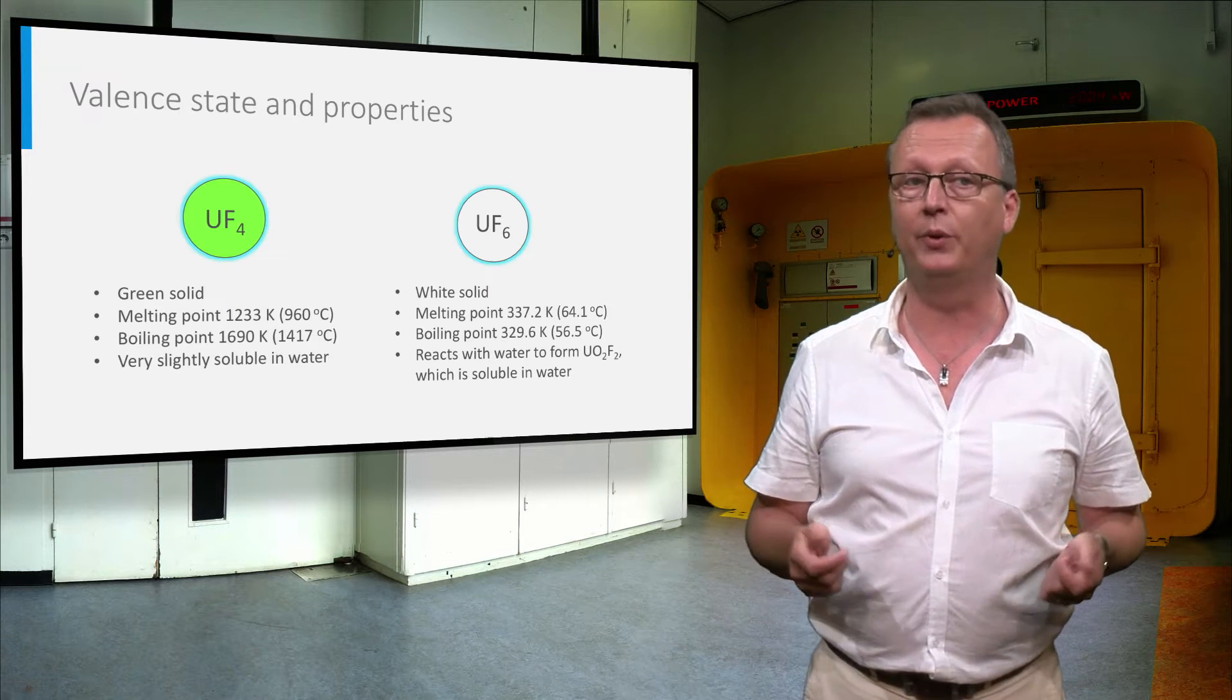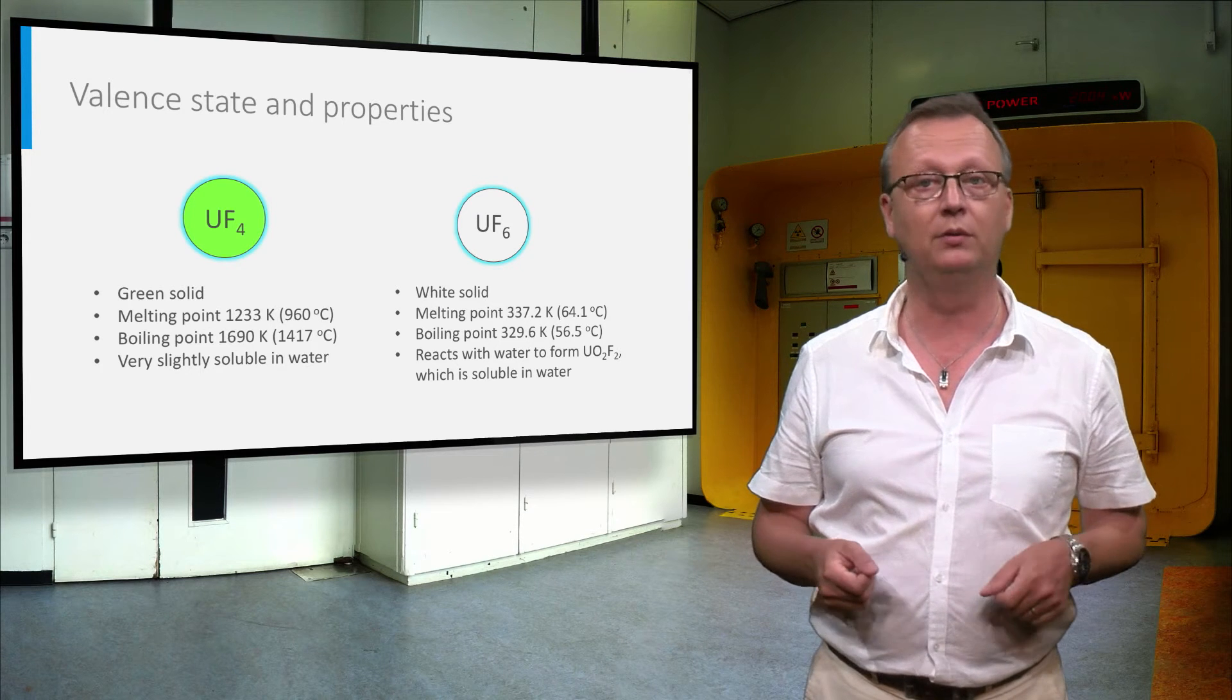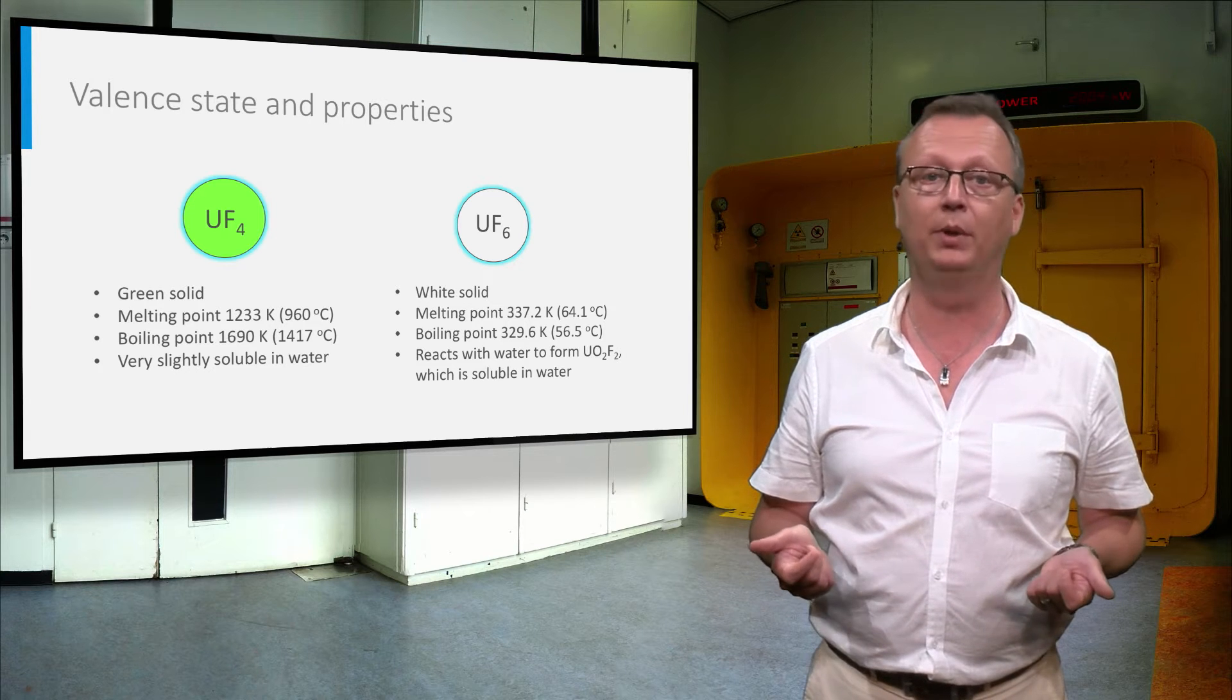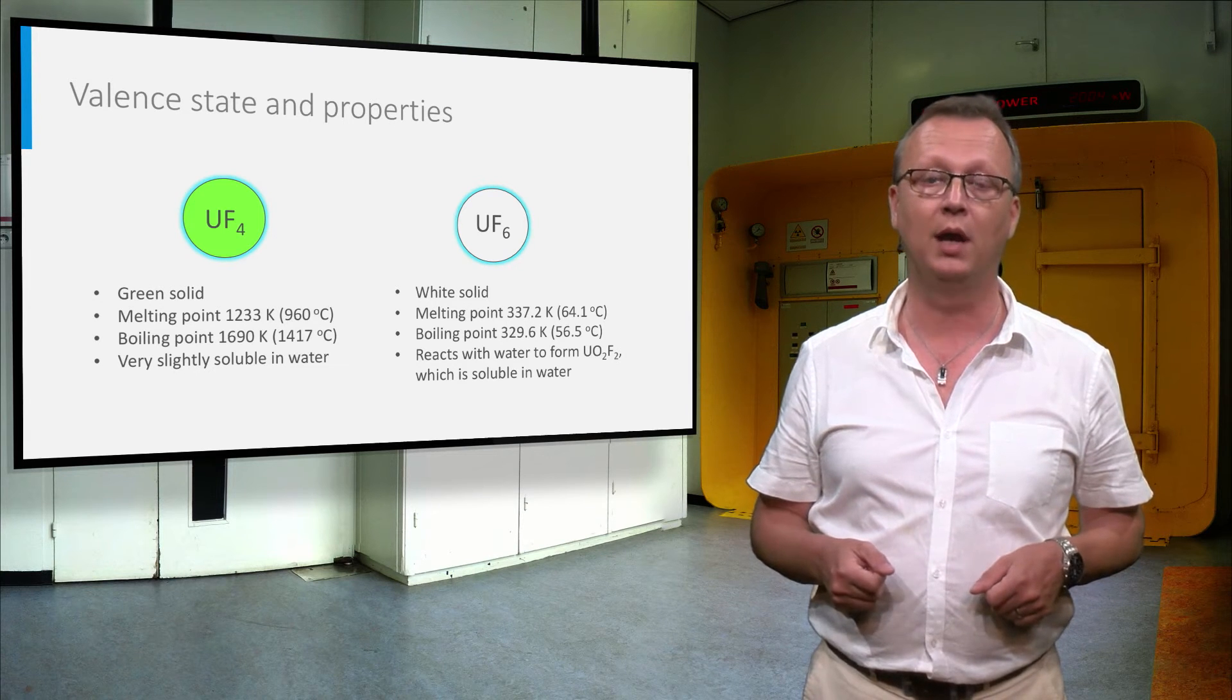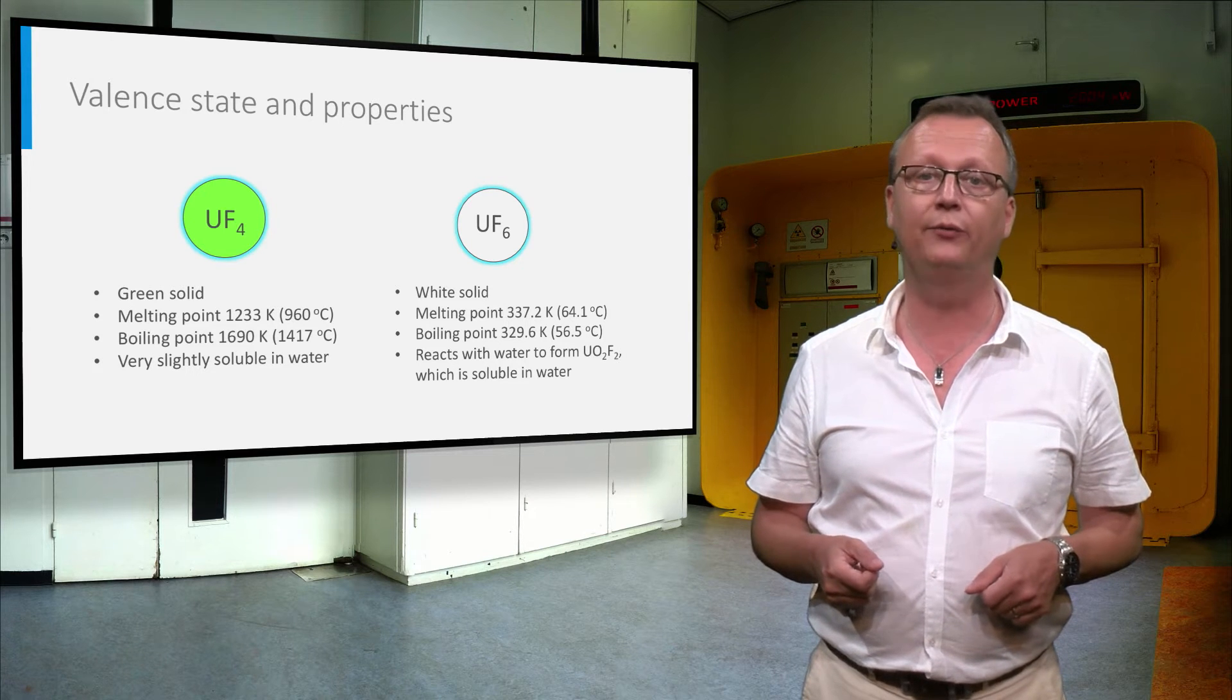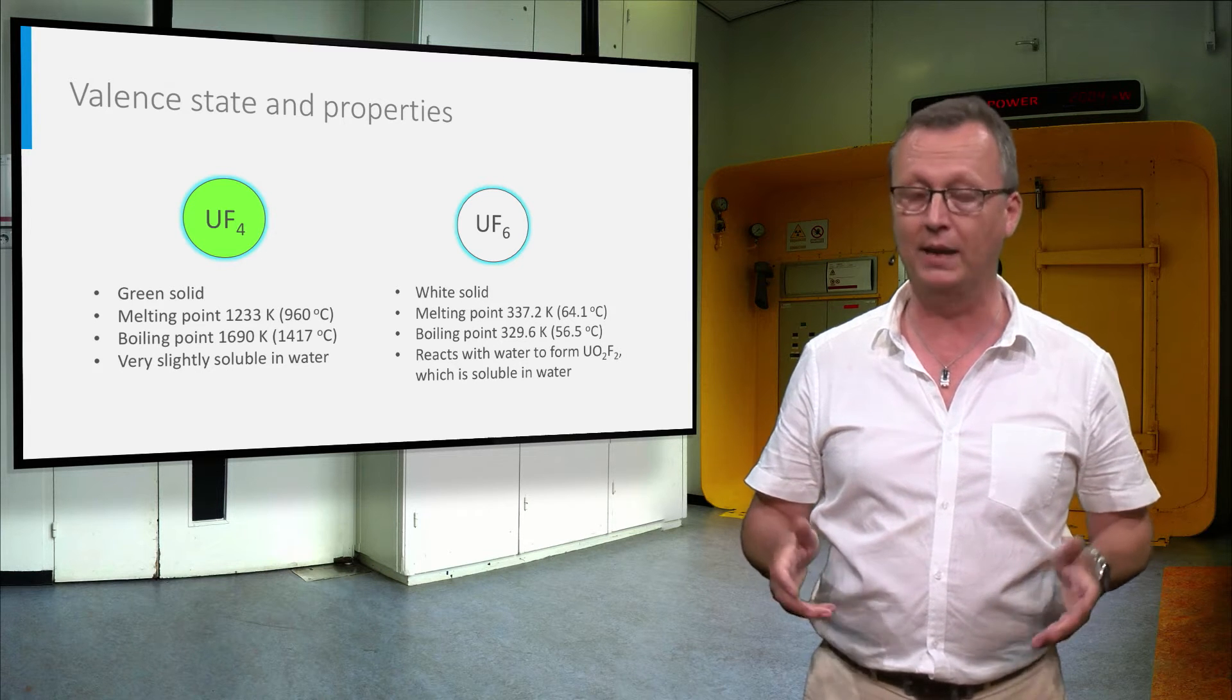The valence state of uranium has a strong influence on the physical property of the compounds. For example, the tetrafluoride is a solid salt which just melts below 1000°C and boils just above 1400°C. The hexafluoride in contrast sublimes around 50°C to form a gas before melting.